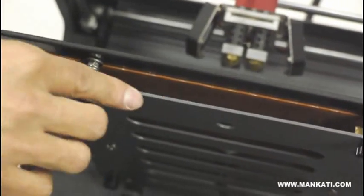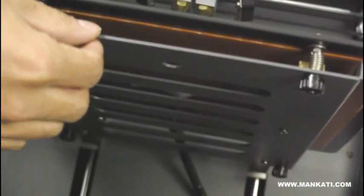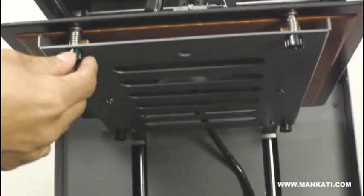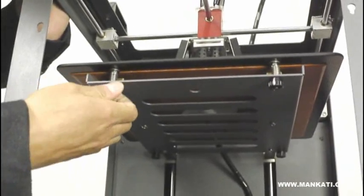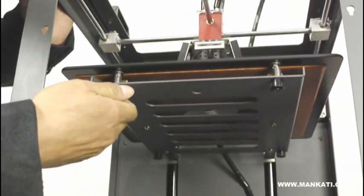And the bottom support. It will be very easy for you to adjust the levelness. You just need to rotate the nut here, and then it will be very easy to adjust the levelness.